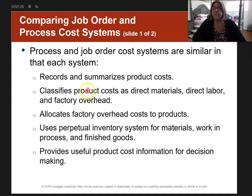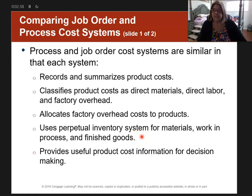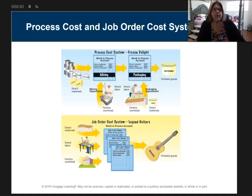They're similar in that they summarize product cost, they allocate factory overhead cost to products, and they always use a perpetual inventory system. And for all intents and purposes, we always use first in, first out. Here's a little flow chart on these two systems — here's what we're going to talk about.